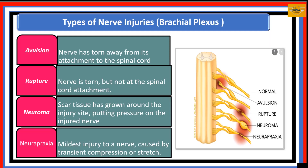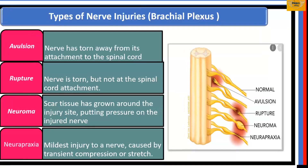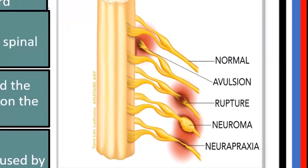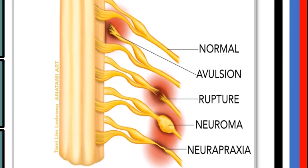Before we go to specific brachial plexus injuries, let's note the various types of nerve injuries. We start with avulsion. In avulsion, the nerve is torn away from its attachment to the spinal cord, as you can notice in the illustration.